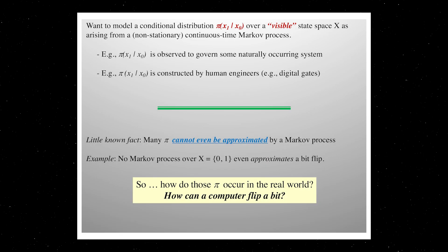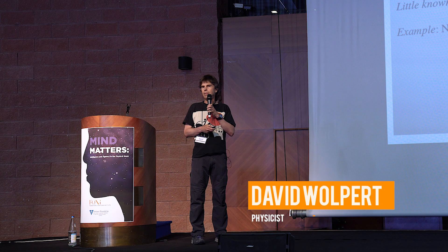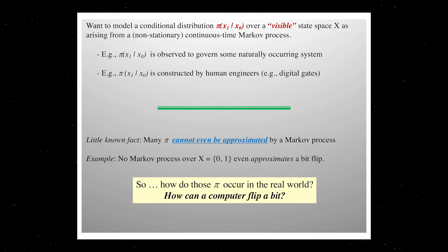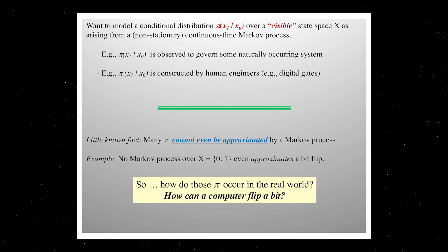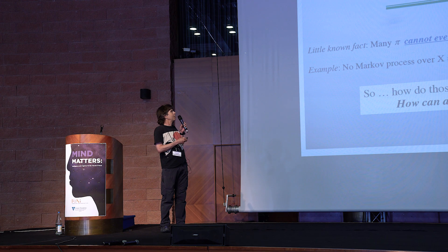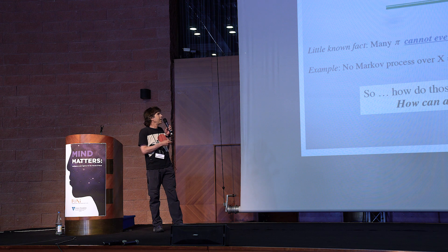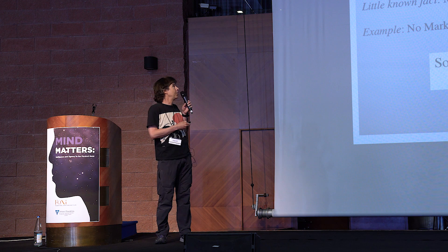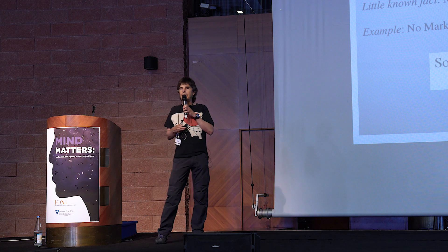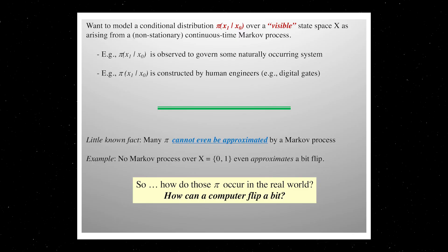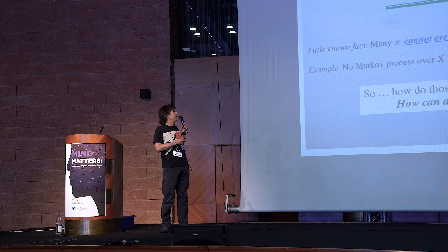What I'm going to be talking about is a bit of a dragon that lurks in the foundations of all modeling of Markov processes. Let's say I just want to analyze a conditional distribution that takes some initial state of a system X0 and maps it to some ending state a second later, X1. I'll call this space X the visible states. A simple example might be weather patterns, or — more interestingly — a conditional distribution that we human engineers actually construct, like in a digital computer. I want to analyze the thermodynamics of that process. Assuming a Markov world, let's start classical with a continuous time Markov chain.